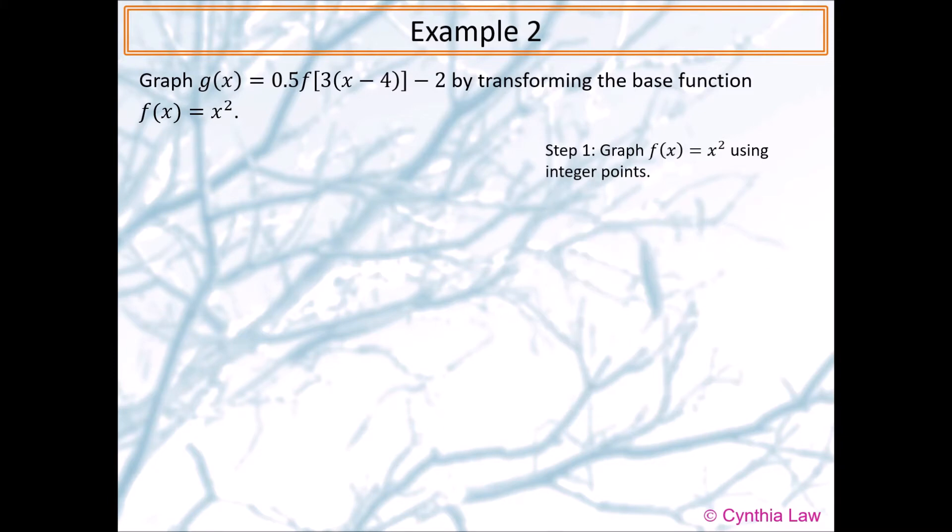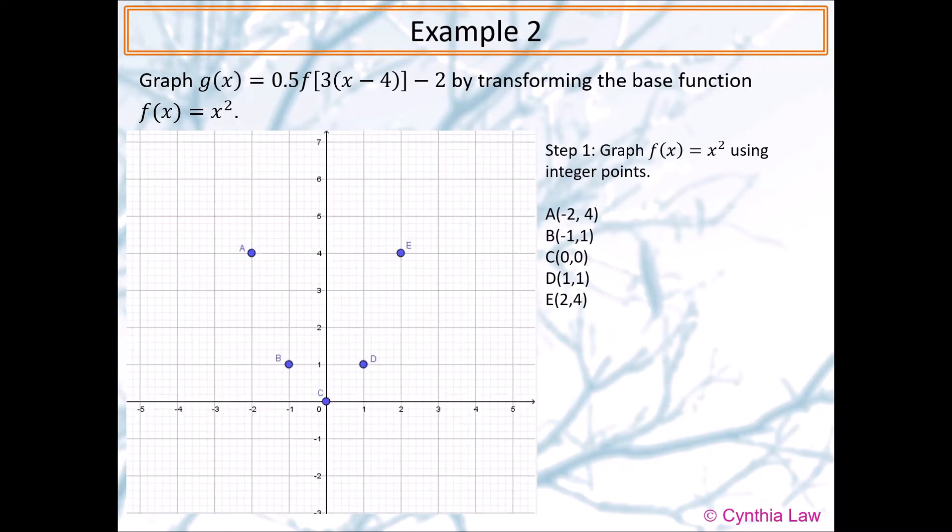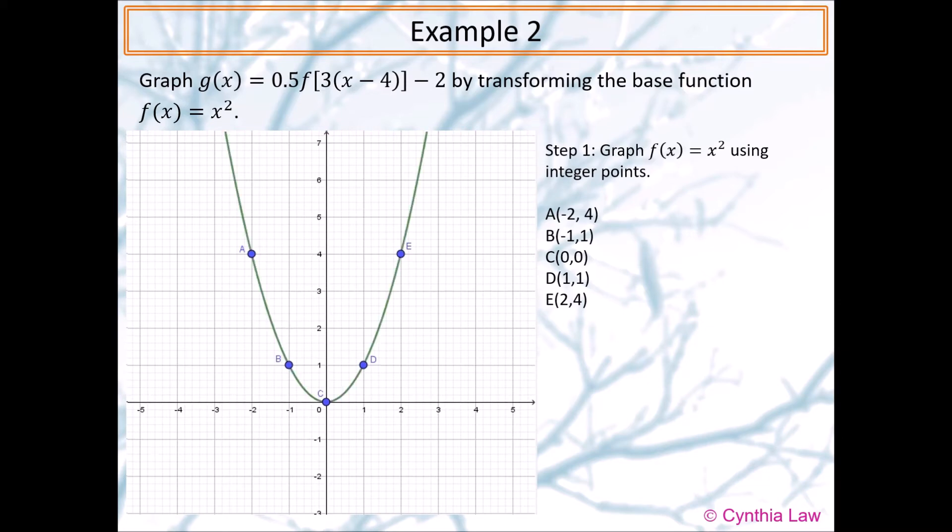Step 1: Graph the base function using integer points. Don't try to use decimals. I'm going to use the x-coordinates -2, -1, 0, 1, and 2, so naturally the y-coordinates would be 4, 1, 0, 1, and 4. Then we graph these points and connect them together into a smooth curve. Don't forget to label it.